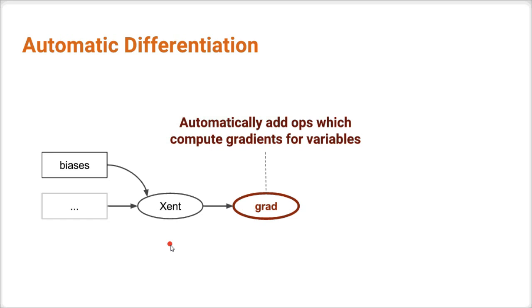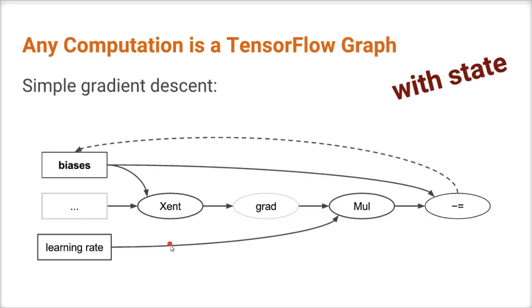So if I tell TensorFlow to give me a gradient, TensorFlow will do it. And what I can do with that is very quickly implement simple gradient descent by just multiplying the gradient with a learning rate and subtracting them from, say, my biases. So this is a one-step gradient descent implemented as a TensorFlow graph.